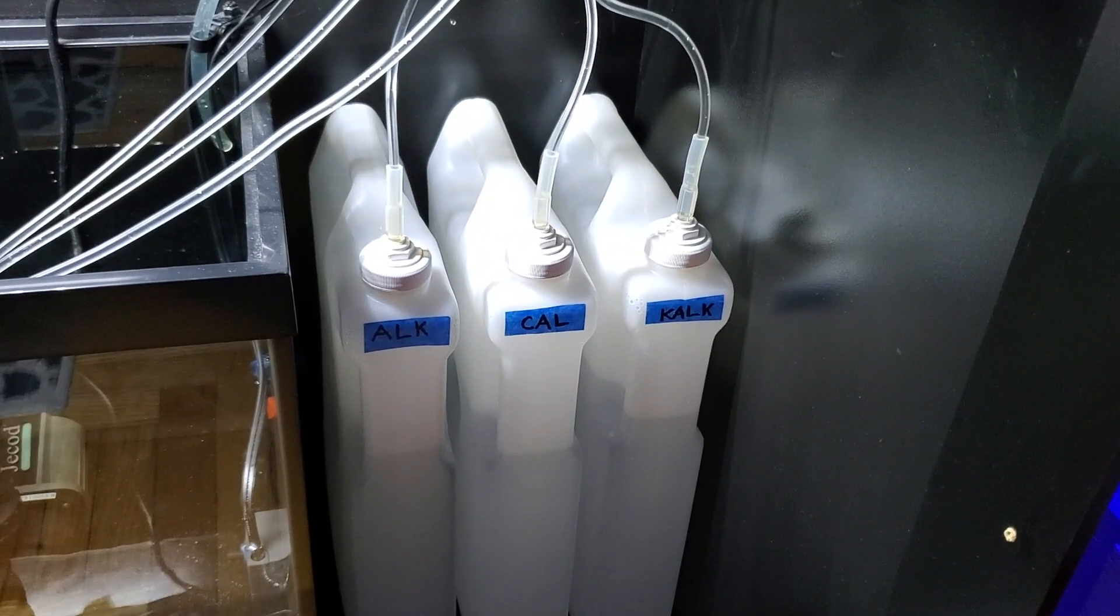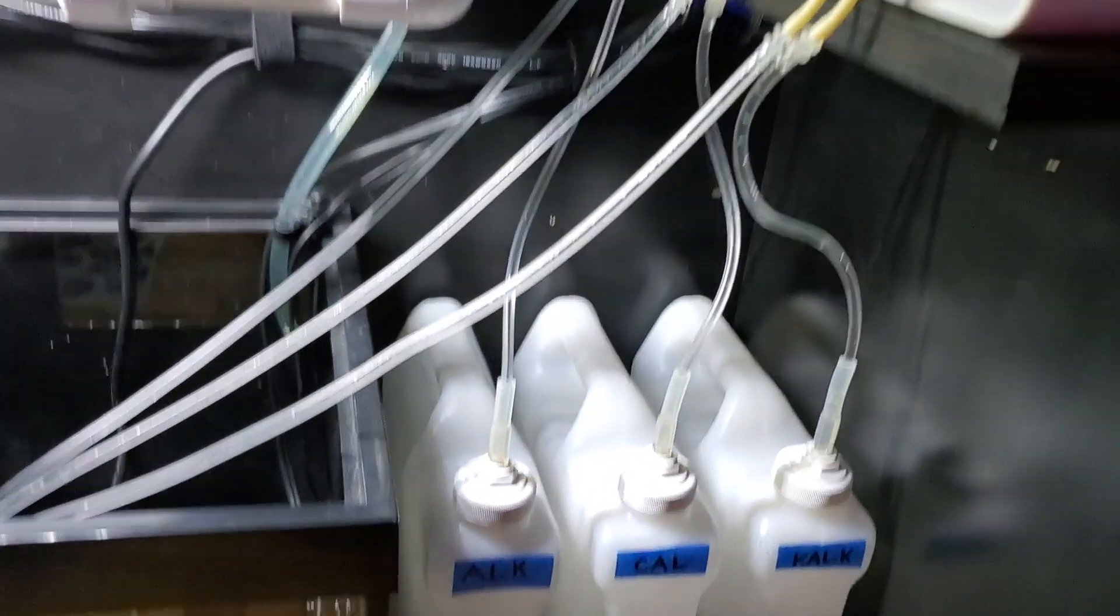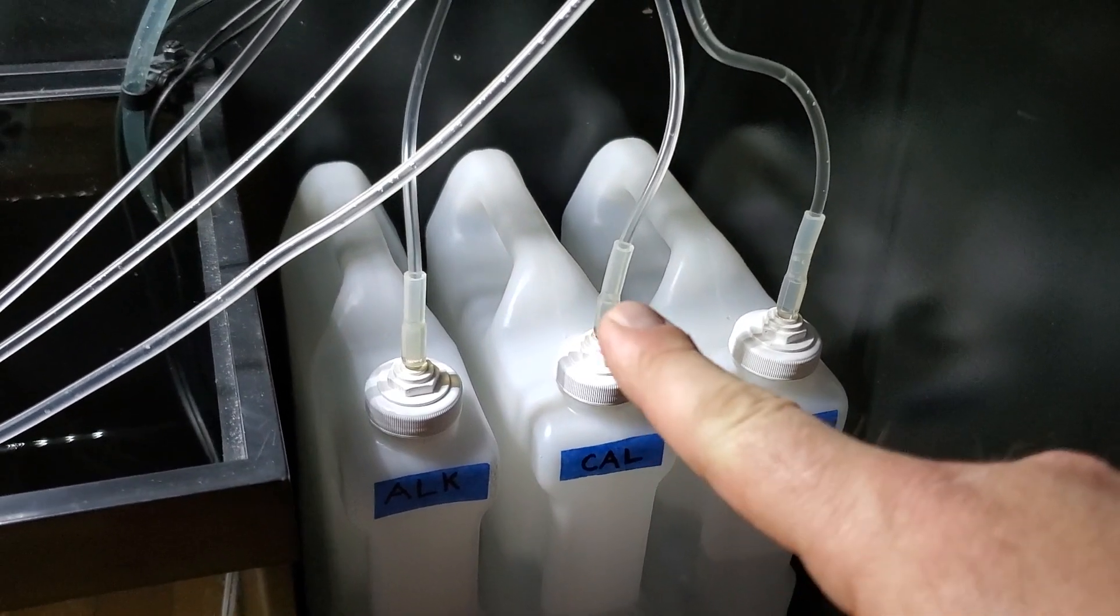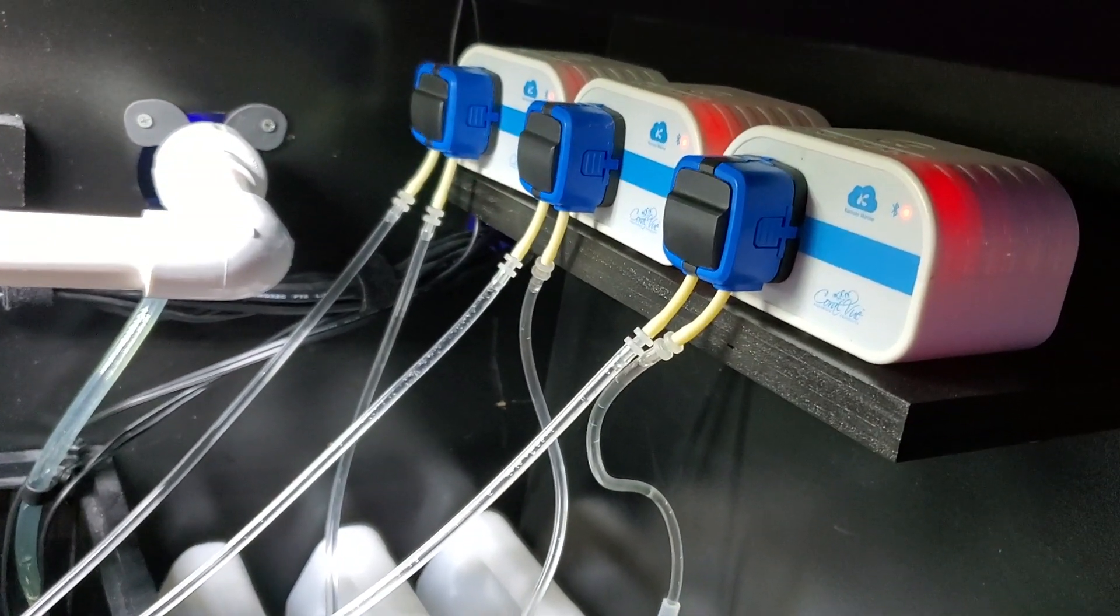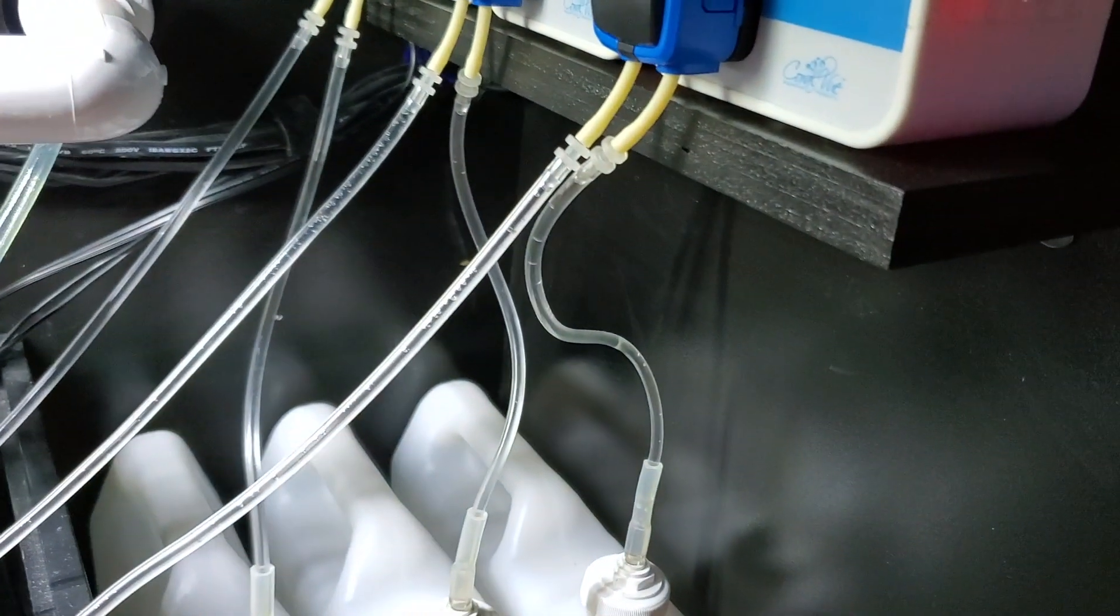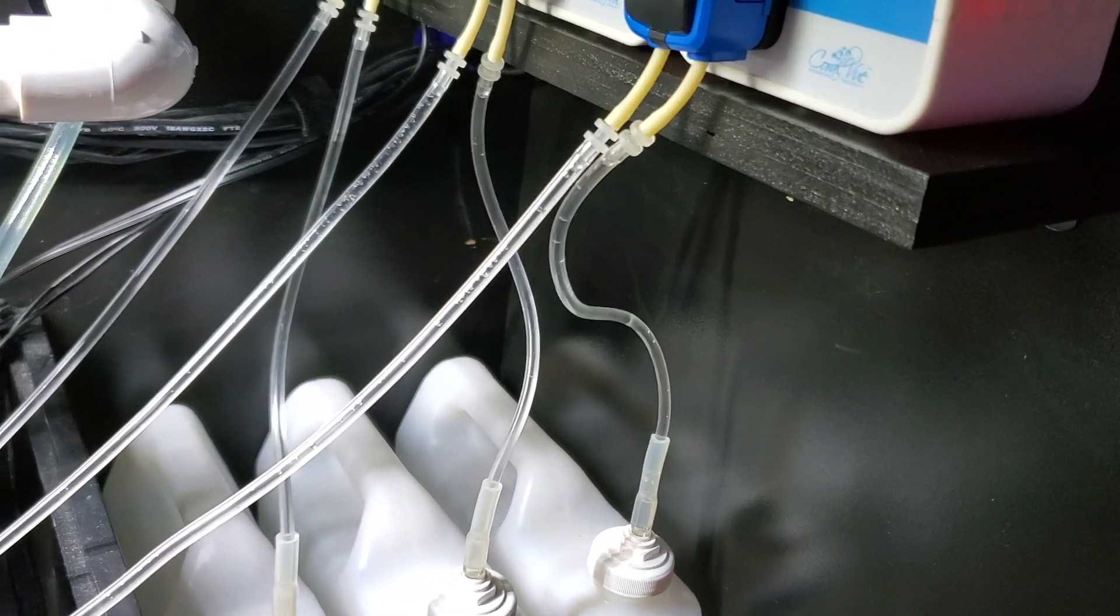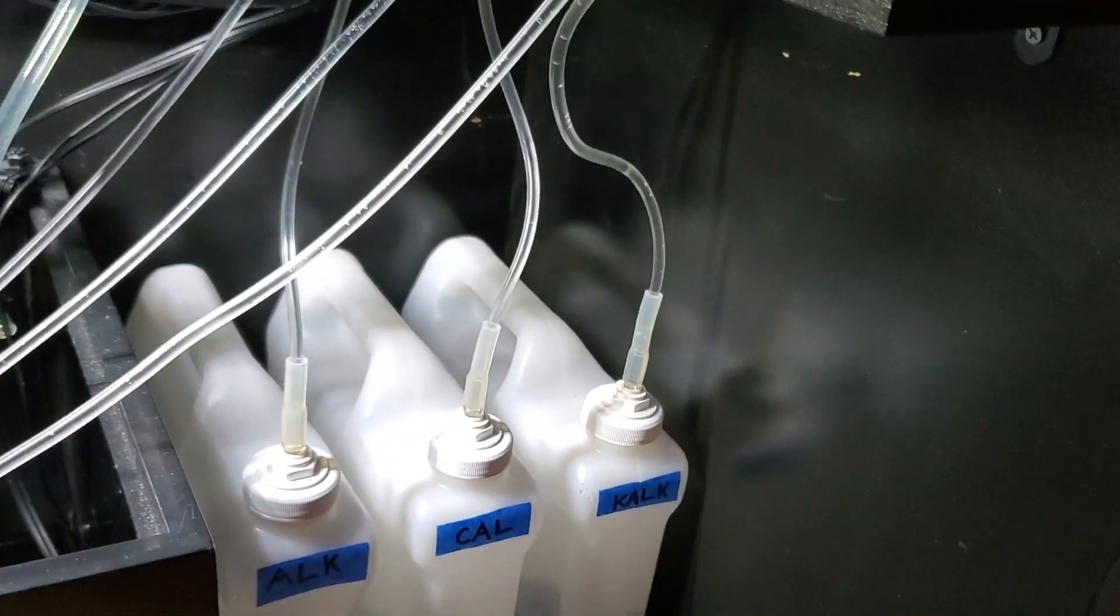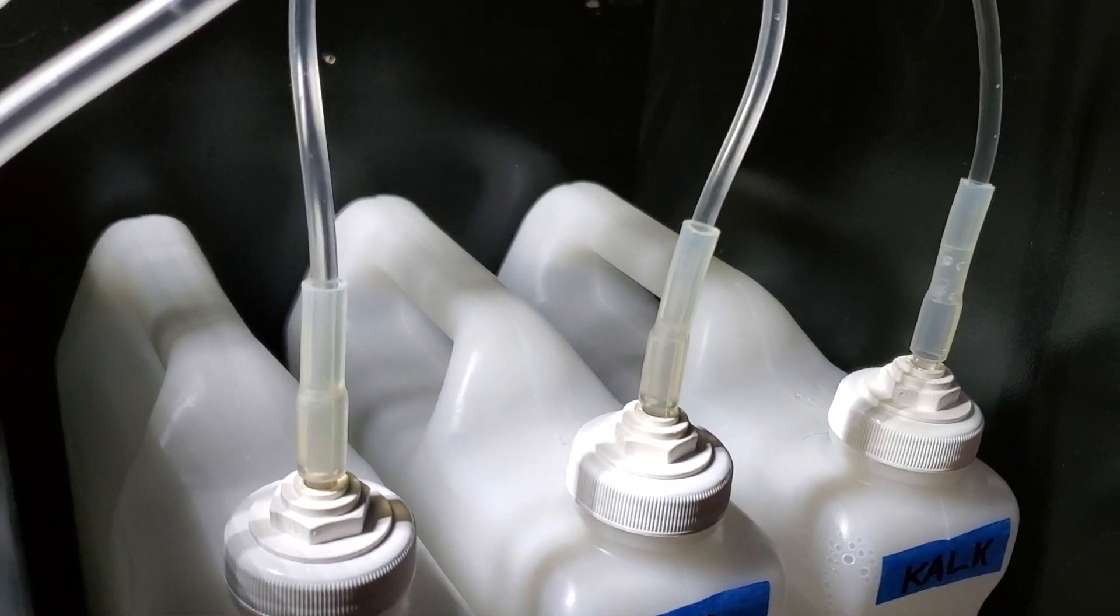What I ended up doing was drilling, getting the little bulkheads and you can see that I have these little tubings here. For anybody that has the Kamoer X1s, you guys know that these are extremely tiny. I believe they're 3 millimeter inside diameter and 5 millimeter outside diameter, so they're very tiny.